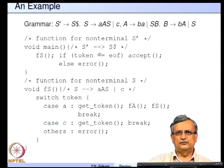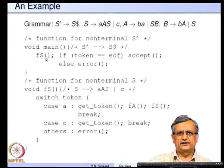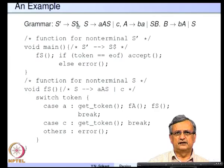The function for S prime is the main program since it corresponds to the start symbol. The right-hand side has non-terminal S followed by the end-of-file symbol dollar. The flow is: call function FS for non-terminal S, and once it completes, check whether the next token is EOF. If it is EOF, parsing is done — accept. Otherwise, issue an error message. Whenever there is a non-terminal, call its function; whenever there is a terminal, check whether the next token corresponds to that terminal.